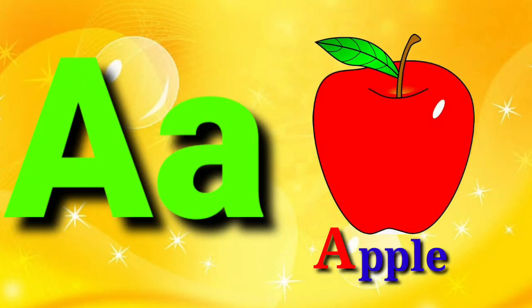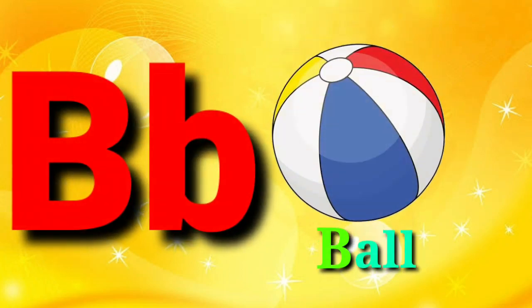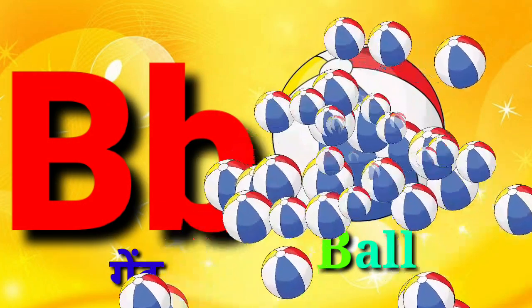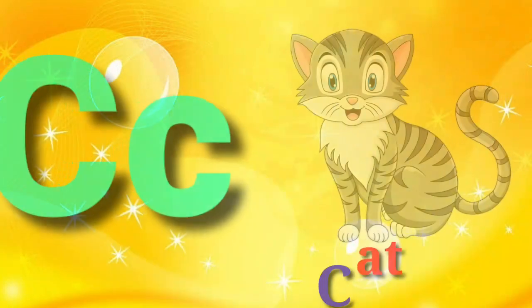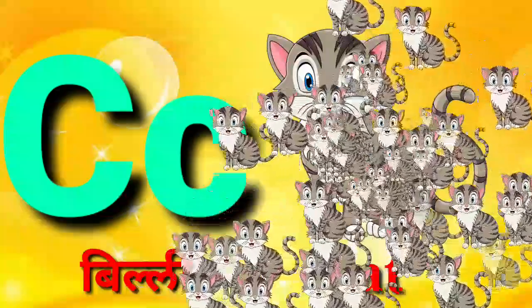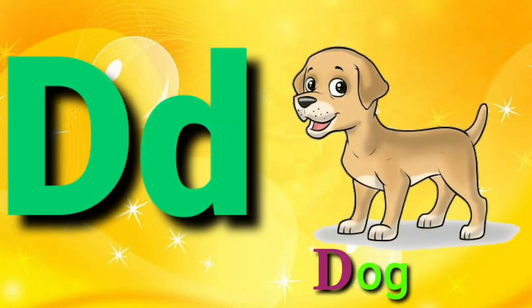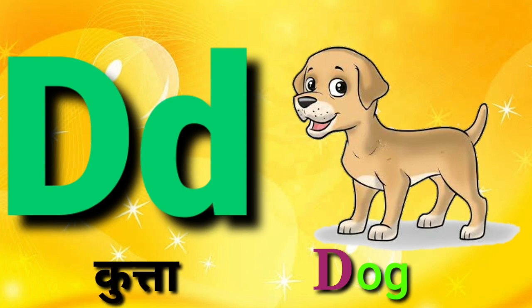A for Apple, Apple means Shib. B for Ball, Ball means Gend. C for Cat, Cat means Willi. D for Dog, Dog means Kutta.